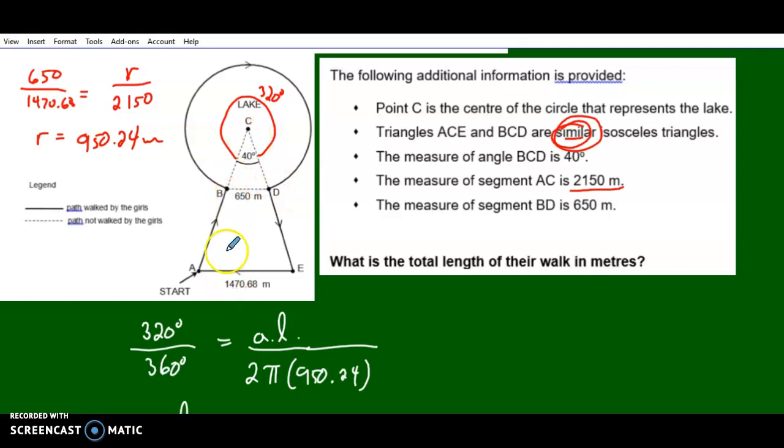Now, what's this length? What is AB? Let's write an equation. AB equals AC minus radius. This length is the whole thing, AC, which is 2150 minus the radius, 950.24. So this whole thing, 2150 minus the radius, is this part. And we can do that twice.